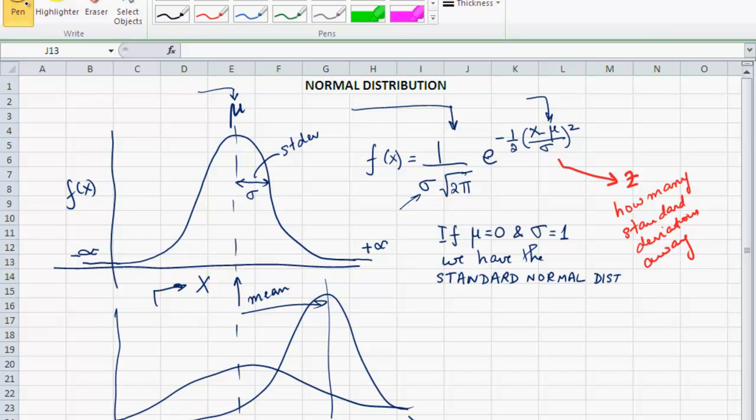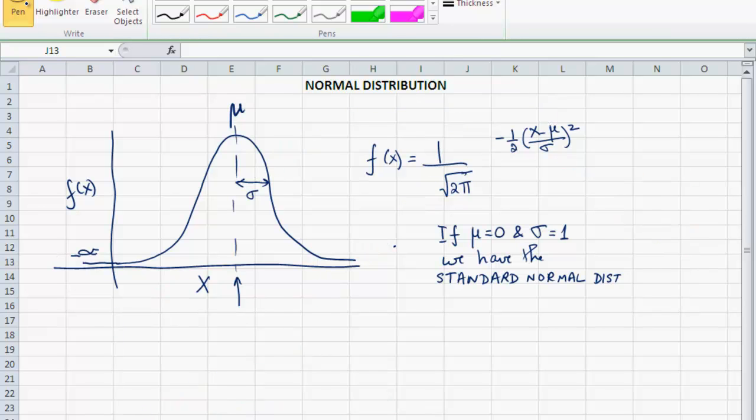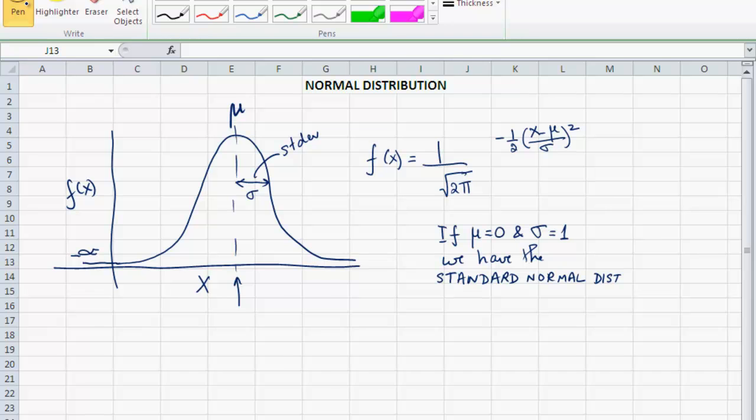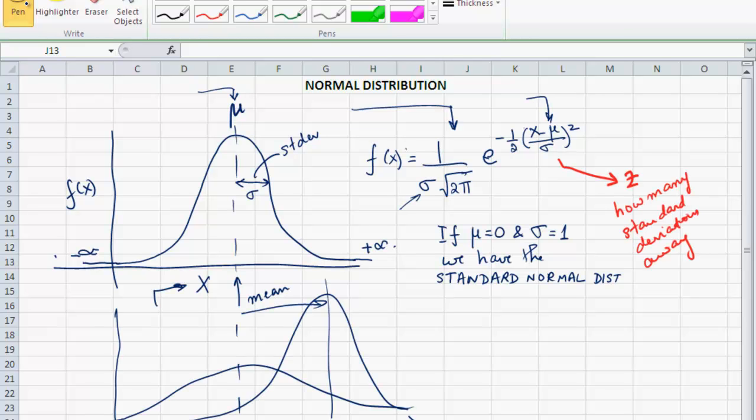The other thing to notice about the normal distribution is that the random variable theoretically can range from minus infinity to plus infinity. As a practical matter, when you work practical problems, very often either the upper limit or the lower limit or both will be bounded. But mathematically, x can range from minus infinity to plus infinity.